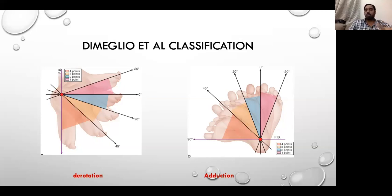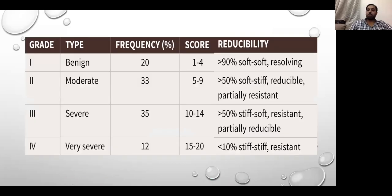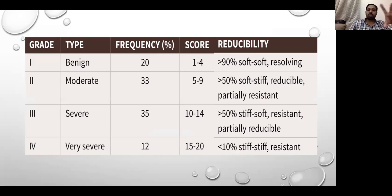A score of 20 to 45 degrees is grade 3, and 45 to 90 degrees is the most severe. The four severity categories use the terms: soft-soft, soft-stiff, stiff-soft, and stiff-stiff, corresponding to benign, moderate, severe, and very severe. The orange color represents the most severe and the pink represents the least severe in the grading system.